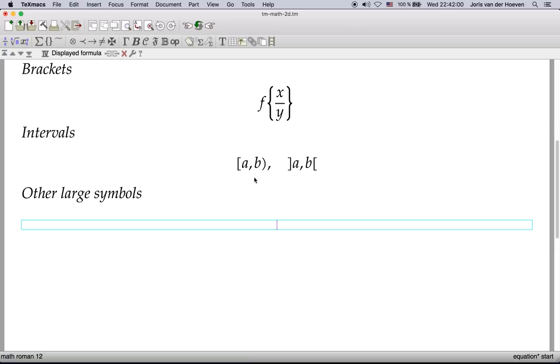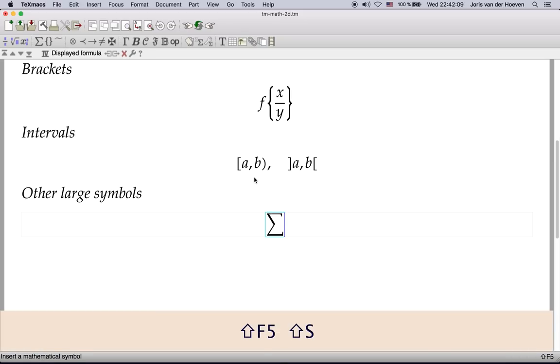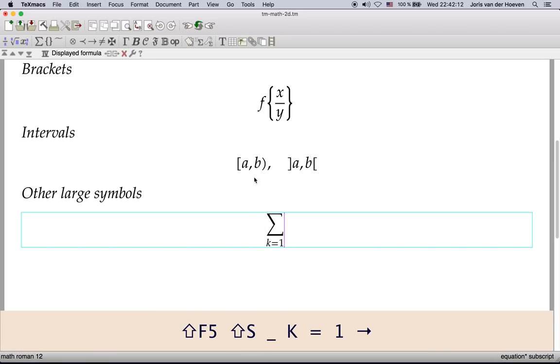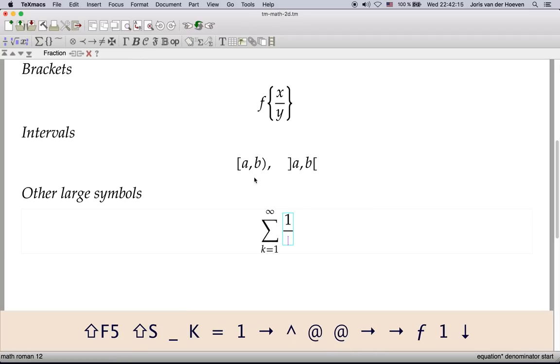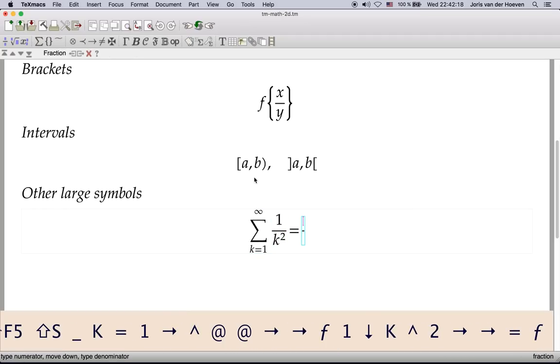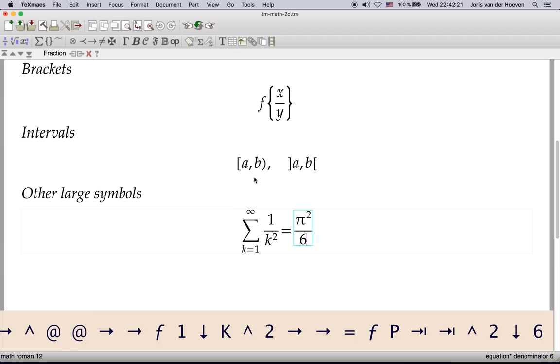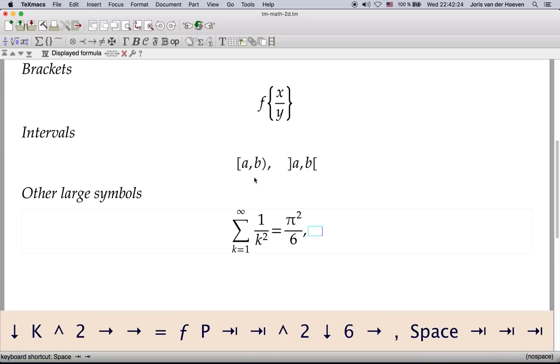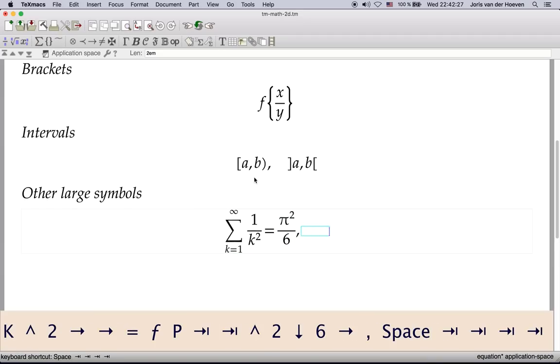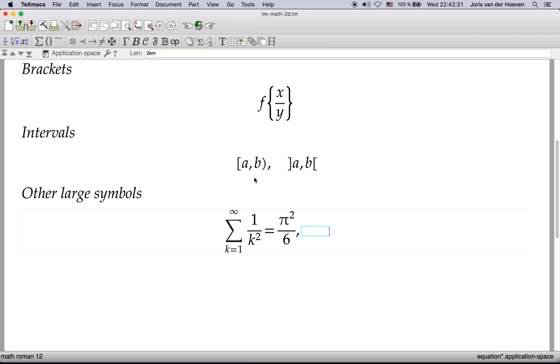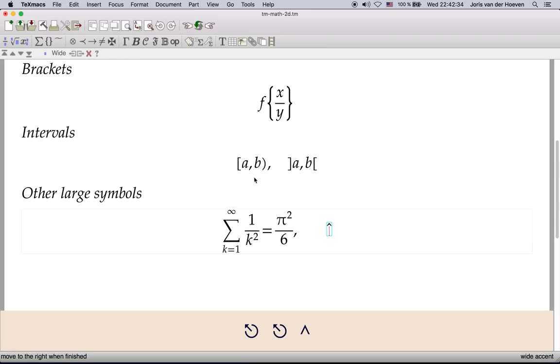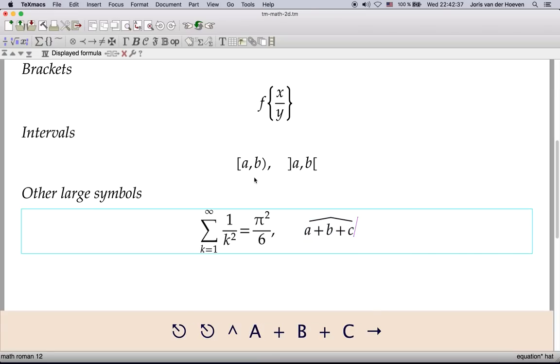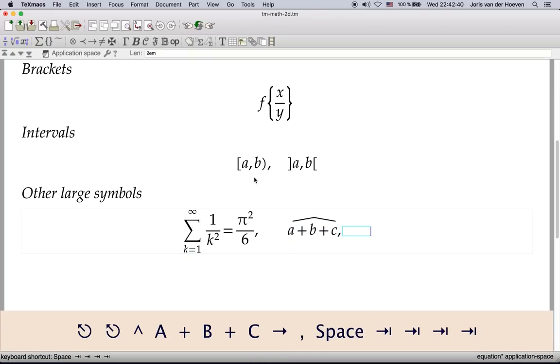Let us next demonstrate the use of various other types of large symbols. Big operators are entered using Shift-F5. Wide accents are entered using Alt-Modifier key or Escape-Escape. Extensible arrows are entered as follows.